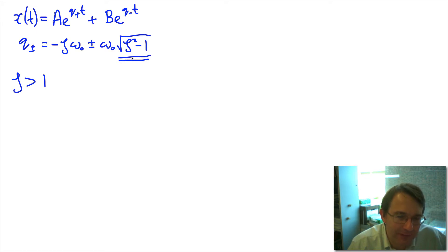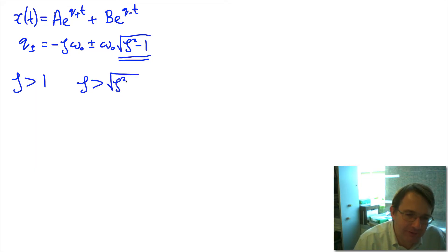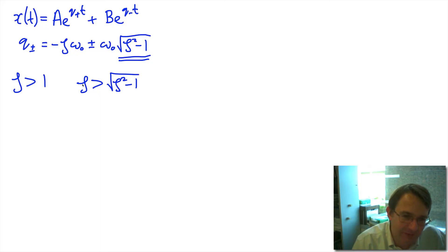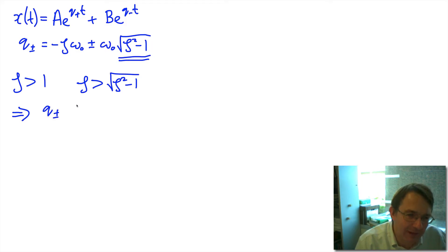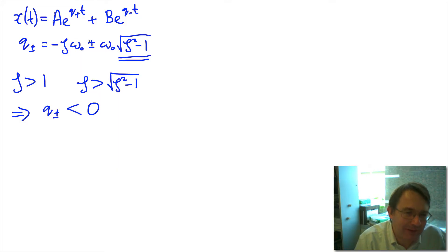This is going to give us a real number. The square root of zeta squared minus 1 is always going to be less than zeta, because you're taking zeta squared, subtracting 1 from it, and then taking the square root. So both q-plus and q-minus are going to be less than zero. This is actually going to be a good thing, because they're in the exponents. If we had a positive exponent, that would mean the displacement would exponentially grow with time, which would violate conservation of energy.